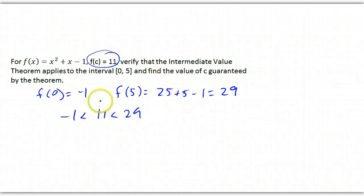So, yes, the intermediate value theorem does apply. So, let's go ahead and find the value of c, and it should end up being between 0 and 5. So, 11 will equal c squared plus c minus 1. 0 will equal c squared plus c minus 12, which is equal to c plus 4 and c minus 3.